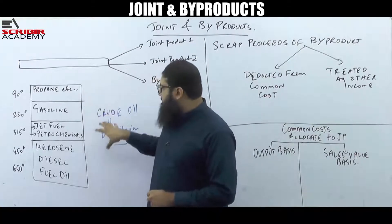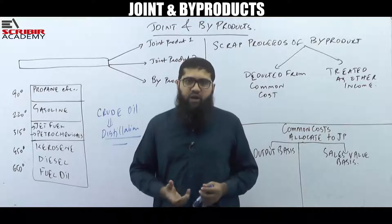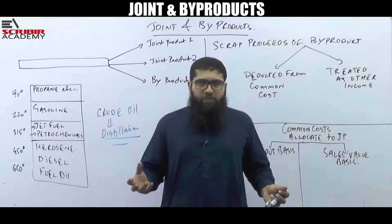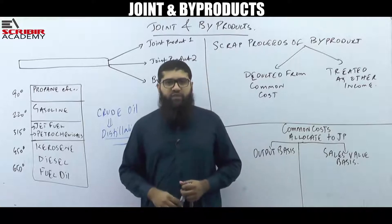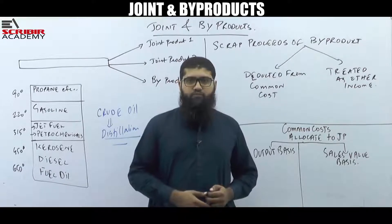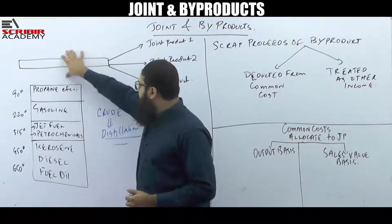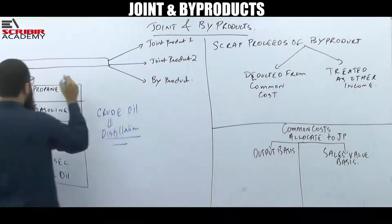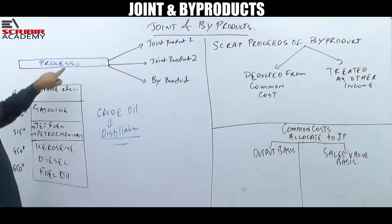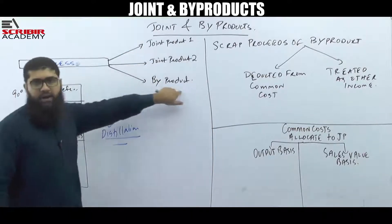This similar situation — where one specific manufacturing process starts and you end up getting multiple products — creates a key accounting problem: how exactly should we deal with the costs incurred during that manufacturing process? I have drawn a simple diagram here referring to a process, and as a result of that process, you end up getting joint product 1, joint product 2, and a byproduct.